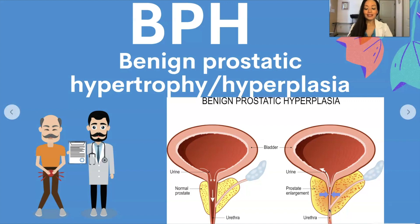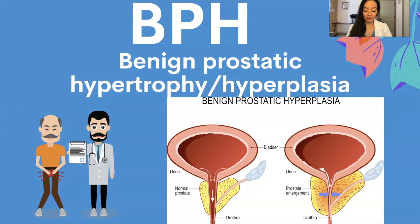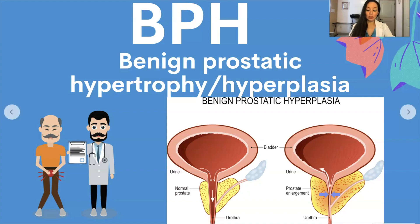The prostate goes through two main growth periods as a man ages. The first occurs in early puberty when the prostate doubles in size. The second phase begins around age 25 and continues during most of a man's life — and BPH happens with this second growth phase. As the prostate enlarges, it pinches the urethra and the bladder may weaken and lose the ability to empty completely, leaving some urine in the bladder, which can cause a narrowing of the urethra and urinary retention.